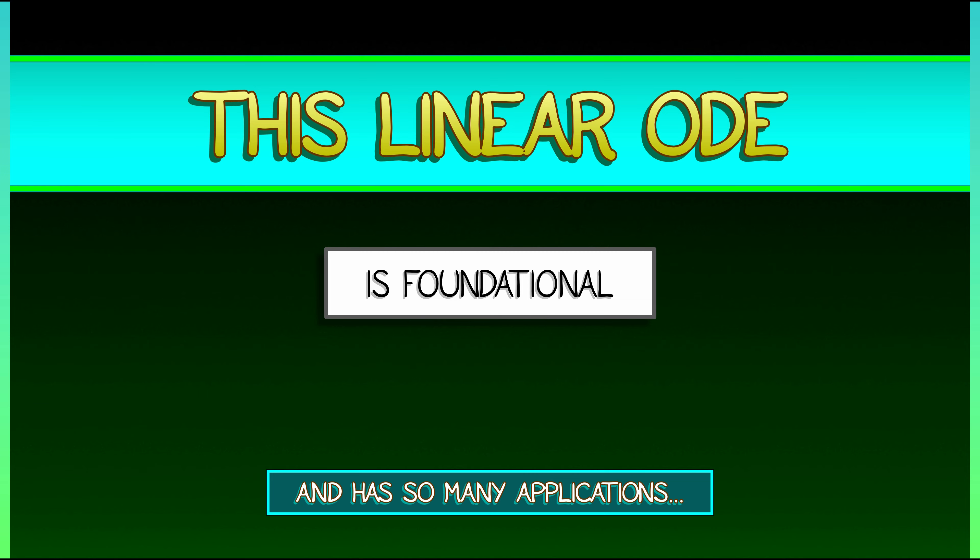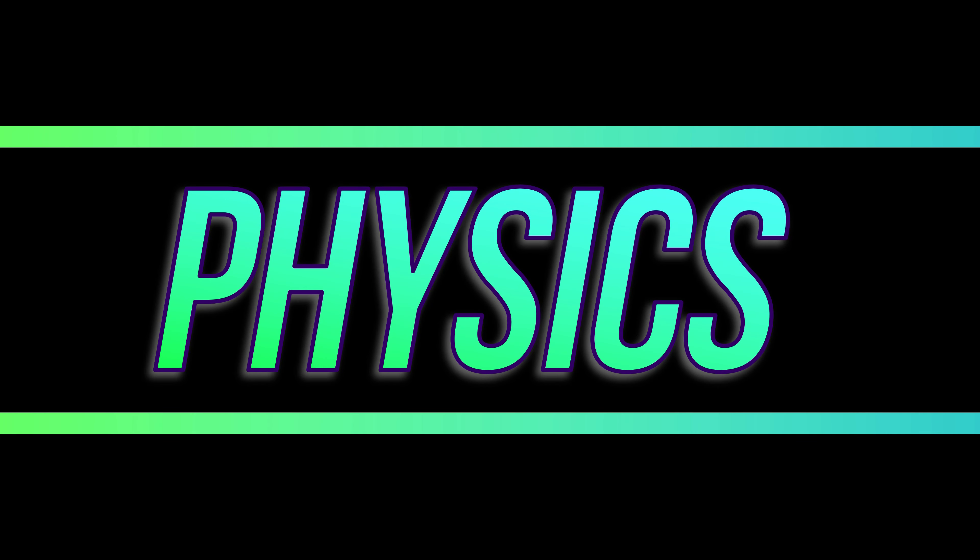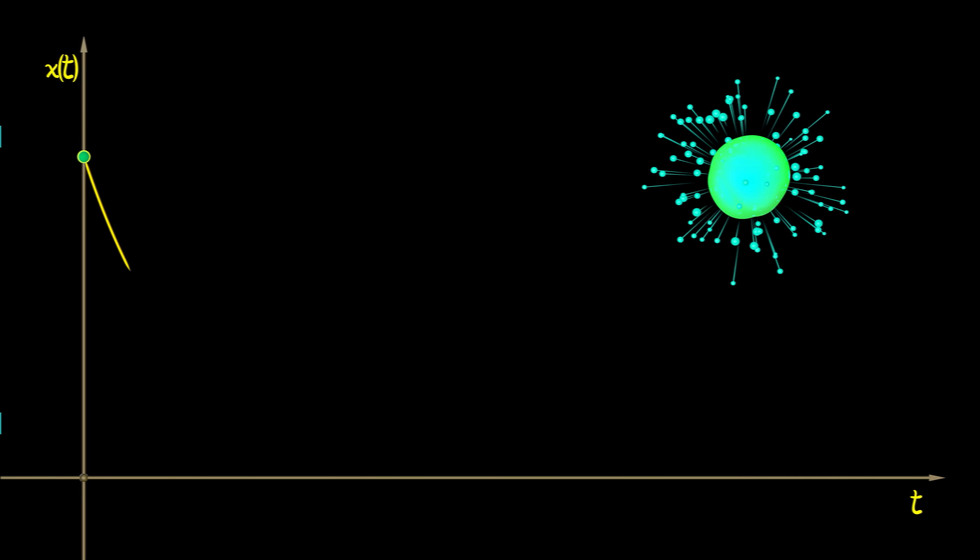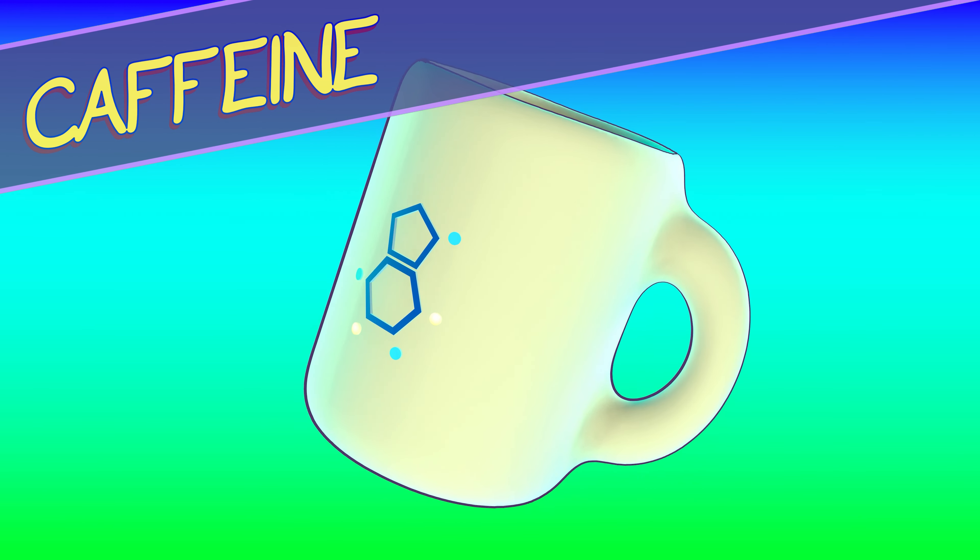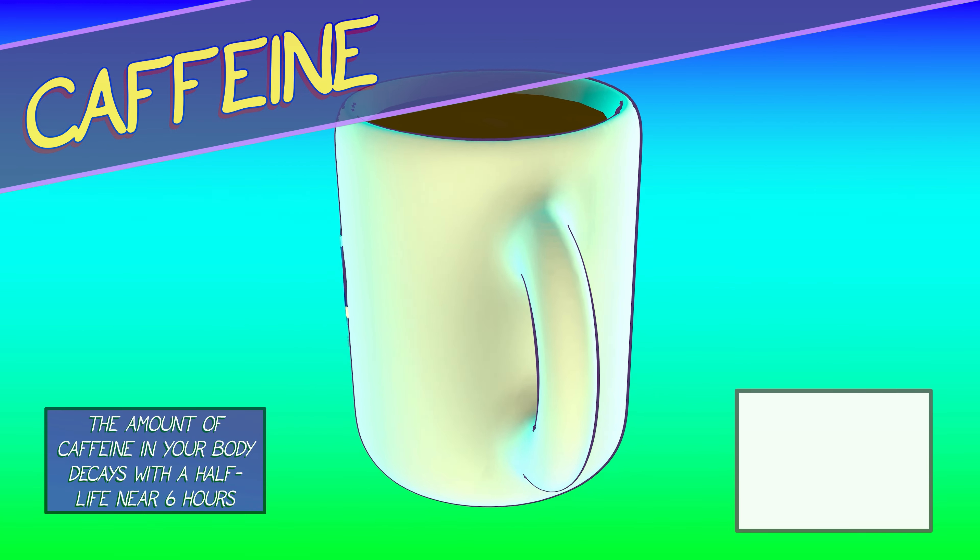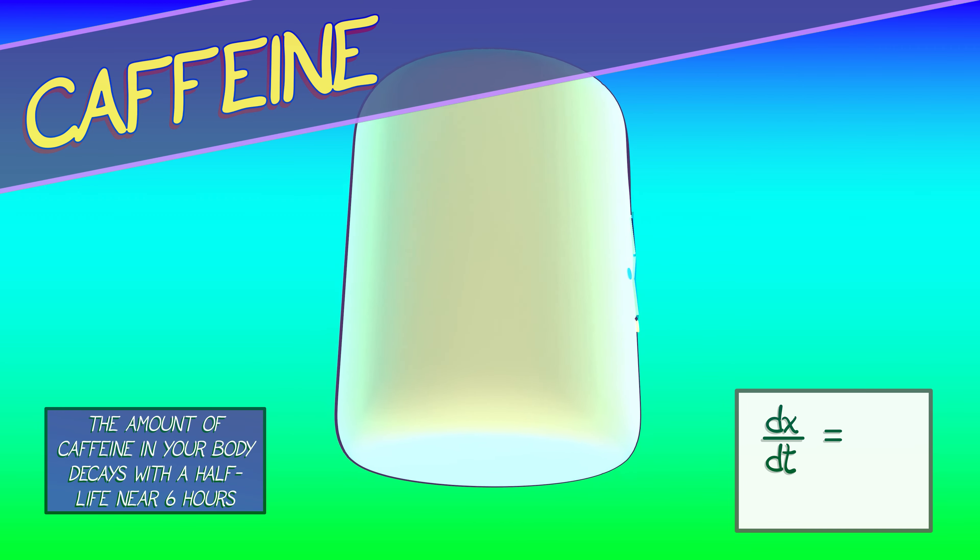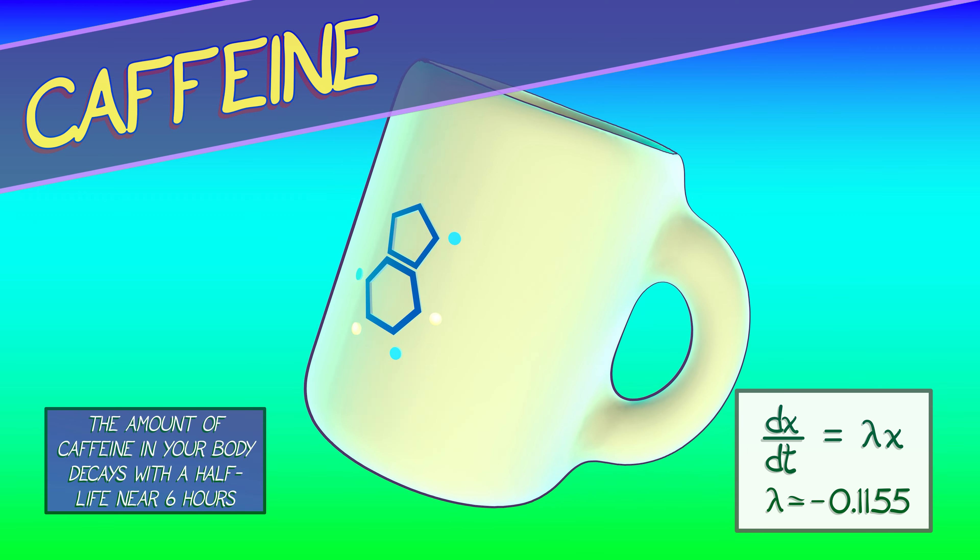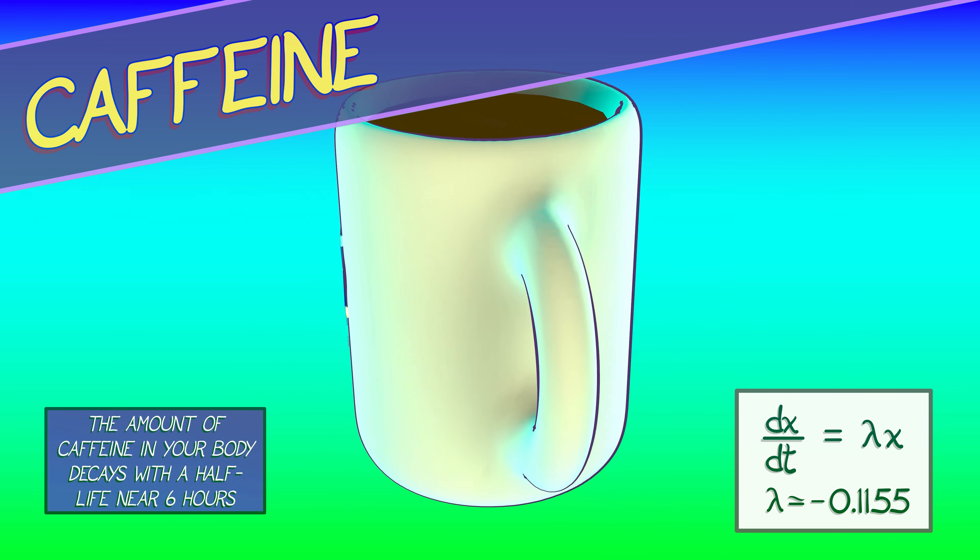What are some of these applications? Consider physics, where there's all kinds of things that grow or decay exponentially, like radioactive goo or caffeine. The amount of caffeine in your body decays with a half-life of about six hours. This decay is encoded in the differential equation dx/dt equals lambda x, where lambda is about negative 0.1155, in order to get that half-life of six hours.